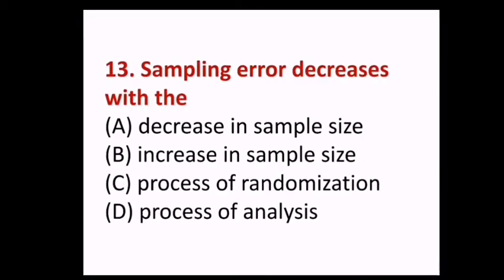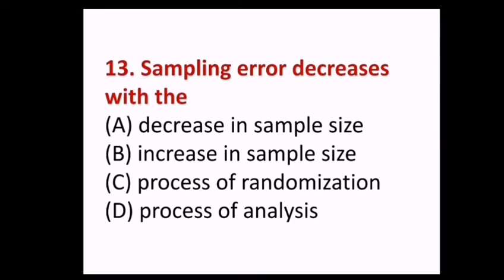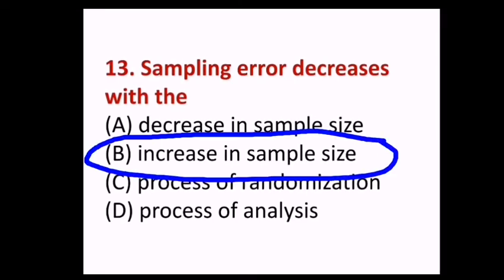Next question: Sampling error decreases with the — (A) decrease in sample size, (B) increase in sample size, (C) process of randomization, (D) process of analysis. Answer B, increase in sample size.